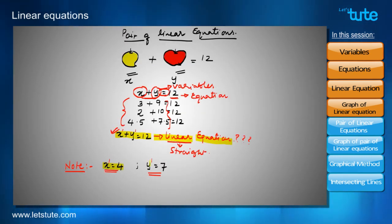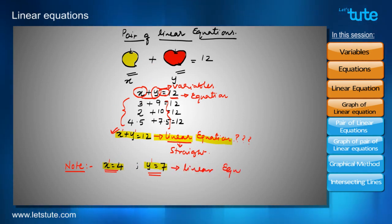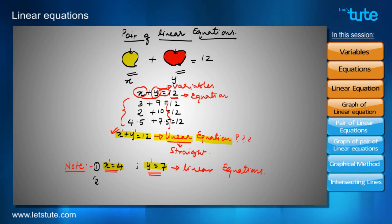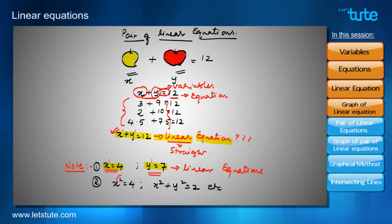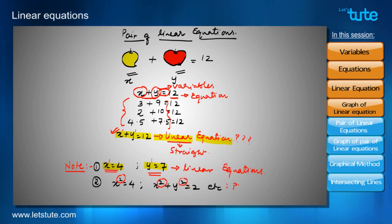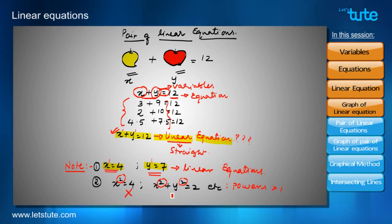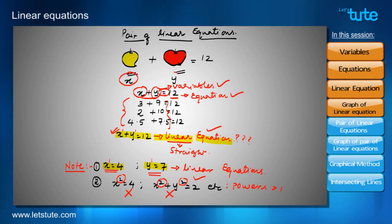So equations like x equals 4 and y equals 7 are also called linear equations — this is Note 1. Note 2: there are equations like x squared equals 4 or x squared plus y squared equals 2, where the powers of the variables are greater than 1. Such equations are not called linear equations. But we still need to find the individual price of one mango and one apple.